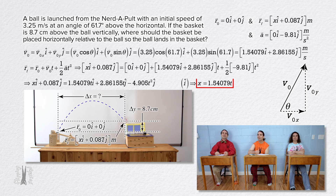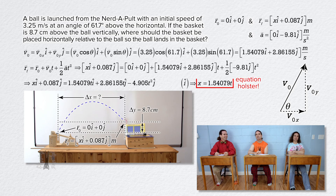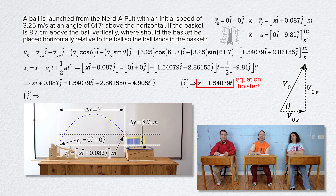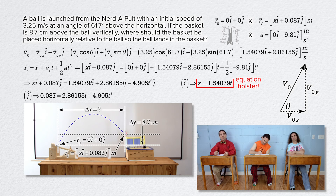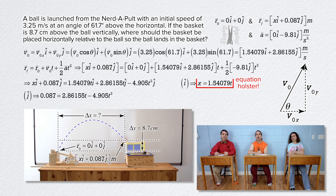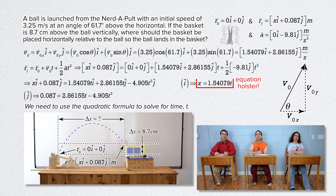Let's put that in our equation holster. Let's switch over to the y direction and all the j unit vector terms. We get 0.087 equals 2.86155 times time minus 4.905 times time squared. There's only one unknown. However, we are going to have to use the quadratic formula.